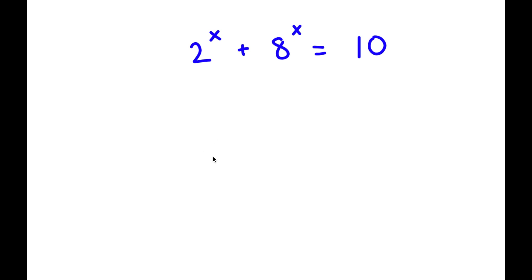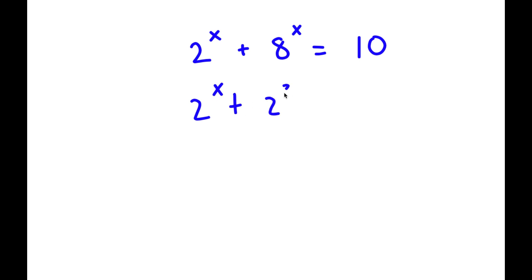So in this problem, I have 2 to the power of x plus 8 to the power of x is equal to 10. To solve this, I'm going to first start by rewriting 8 here as 2 to the power of 3. So now I have 2 to the power of x plus 2 to the power of 3 to the power of x is equal to 10.